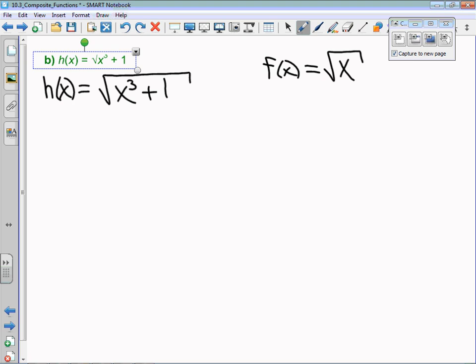So I'm going to say that g of x is that new radicand, which is x cubed plus 1. And then just to make sure that I've done it correctly, I'm going to say that h of x, which they identified as f of g of x, based on what I've written there...